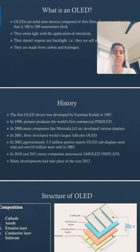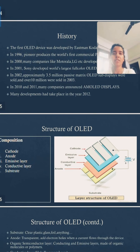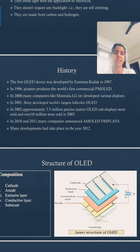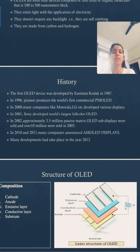The first OLED device was developed by Eastman Kodak in 1987. In 1996, Pioneer produced the world's first commercial PMOLED. In 2000, many companies like Motorola, LG, etc. developed various displays. In 2001, Sony developed the world's largest OLEDs. In 2002, approximately 3.5 million passive-matrix OLED sub-displays were sold, and over 10 million were sold in 2003. In 2010 and 2011, many companies announced AMOLED displays. Many developments had taken place in the year 2012.